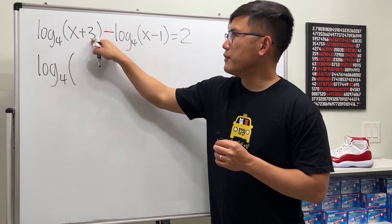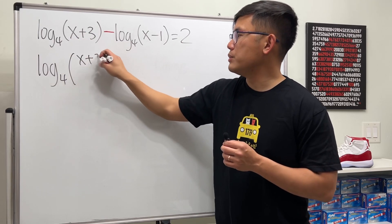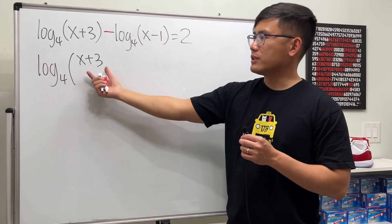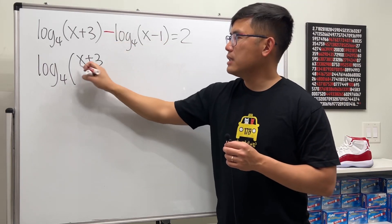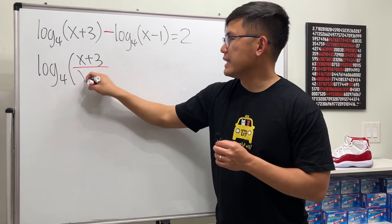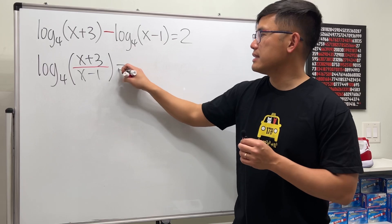The inside is going to be the first, x+3, and it was minus a log, right? So this goes on the bottom. When it's a minus, you divide the inside by the other inside. So (x+3)/(x-1), and that's equal to 2.